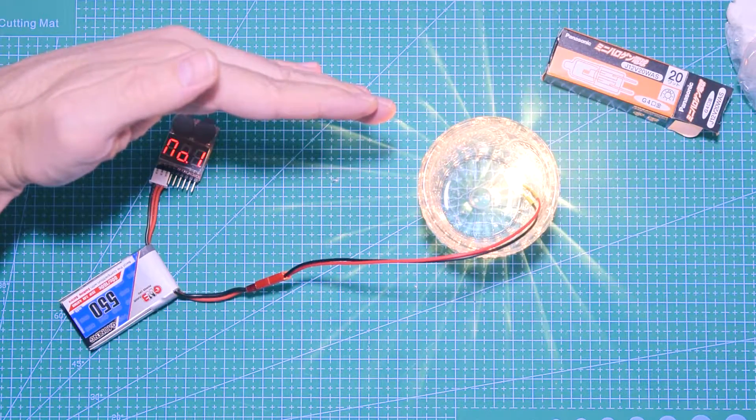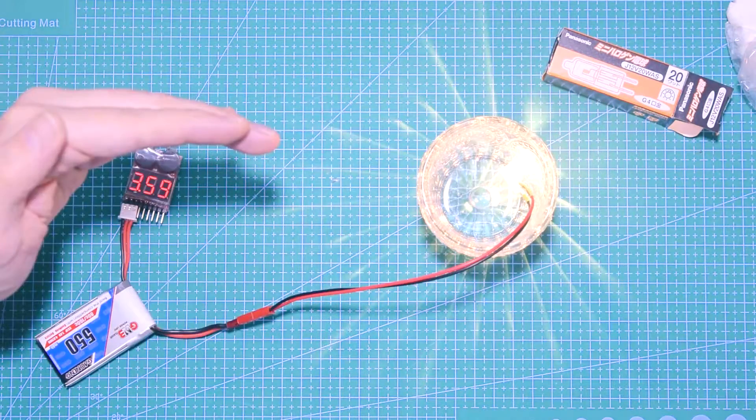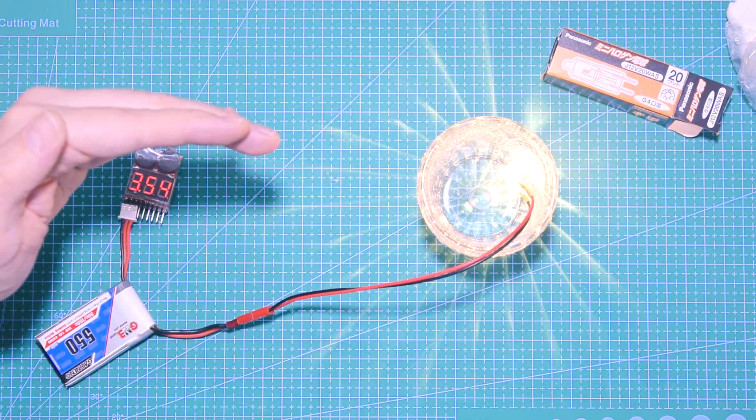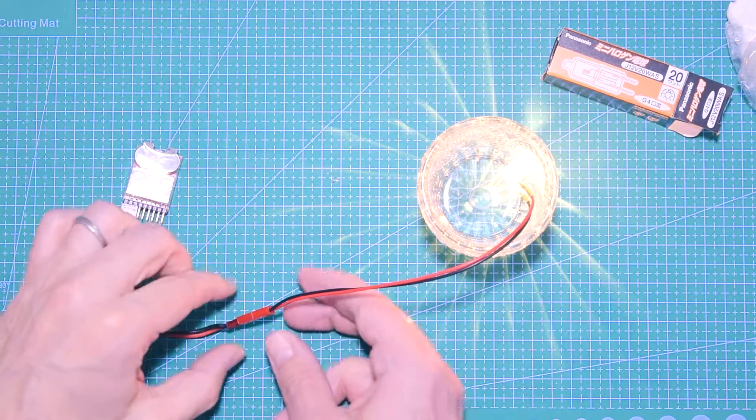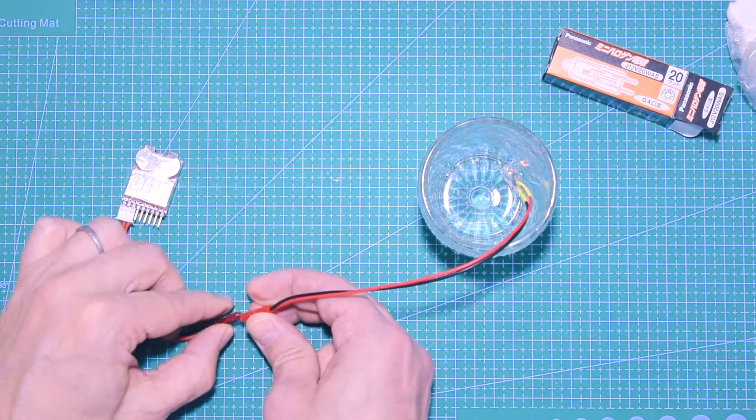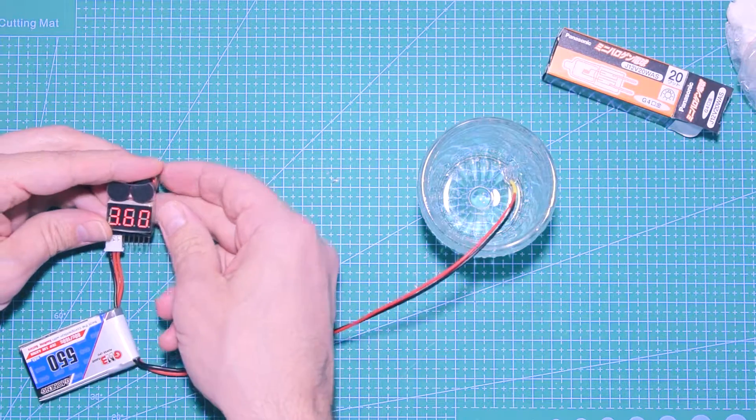You can set a voltage, so once you reach the voltage, as you can see there's a really loud beeper that goes off indicating that the battery has reached low voltage.